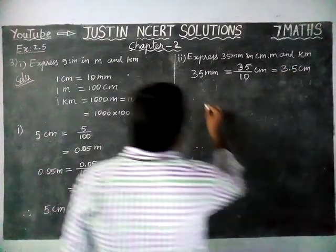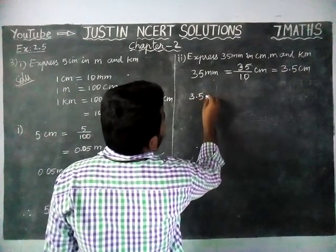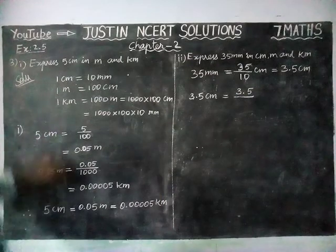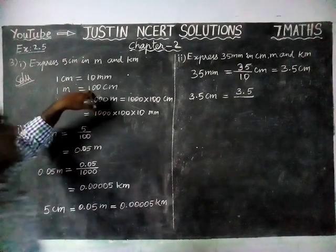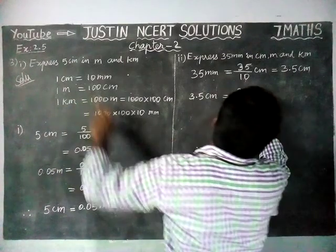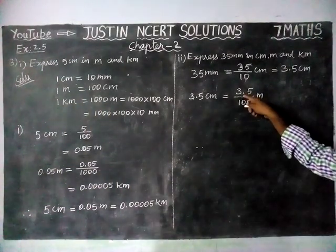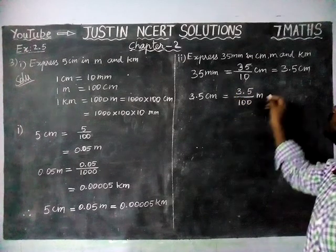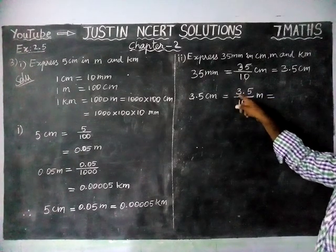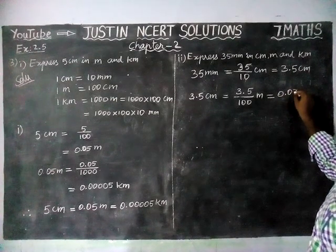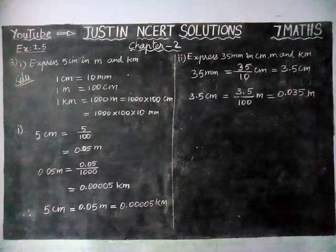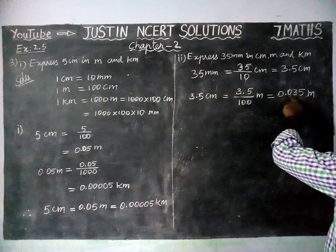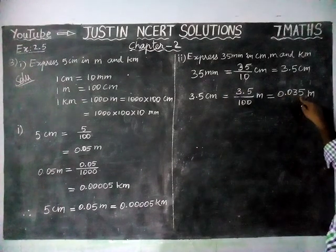Now we are going to convert the centimeter into meter. 3.5 centimeter is equal to 3.5 divided by 100, because 1 meter is equal to 100 centimeter. So we are dividing by 100. Already we have one decimal point, and in the denominator we have two zeros, so we have to move left-hand side two steps. Already one digit is there, so we are adding another zero before the 3. So now 0.035 meter.